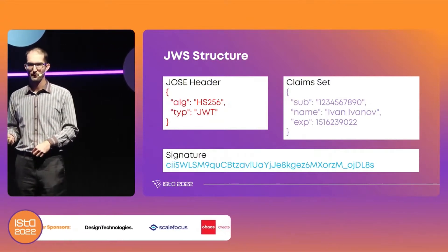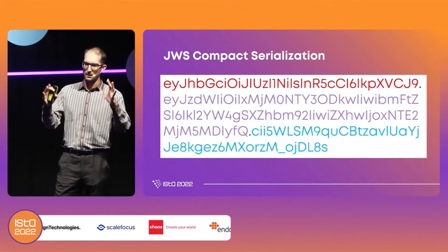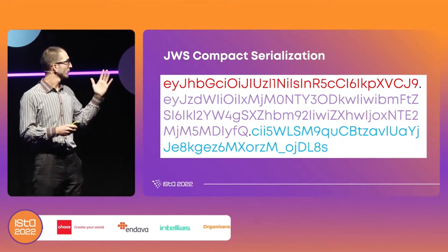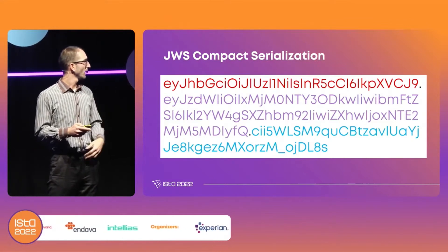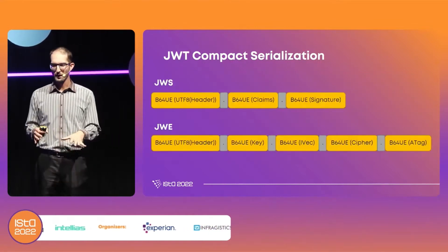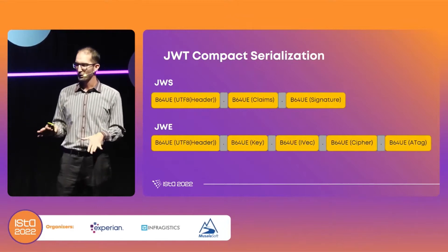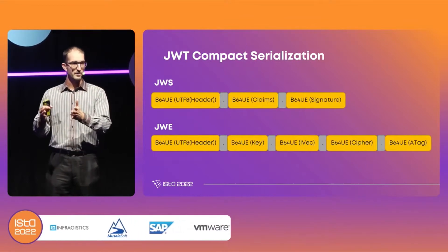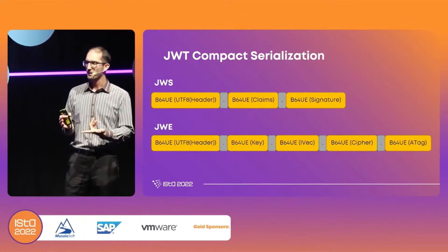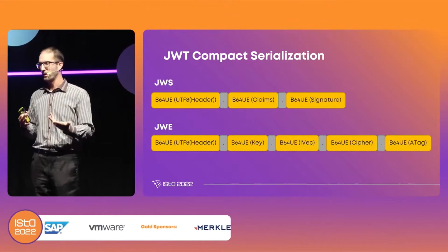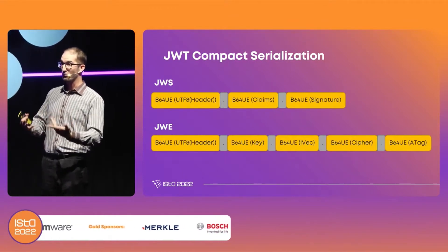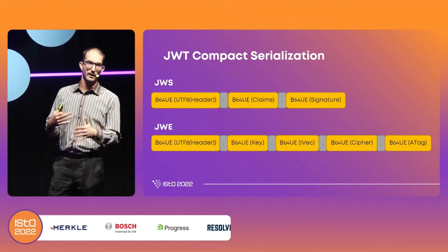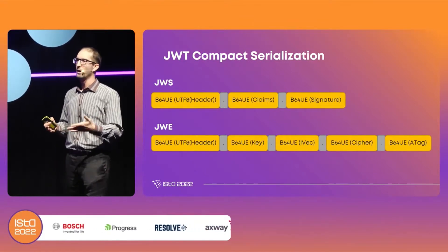The last component is the signature, which is also base64-encoded — this is a cryptographic signature. When all three parts are put together you can see them in different colors: header, claims, and signature. Comparing JWS and JWE: JWS has header dot claims dot signature, while JWE is more complex with five components — header, encrypted key, initialization vector, ciphertext, and authentication tag.